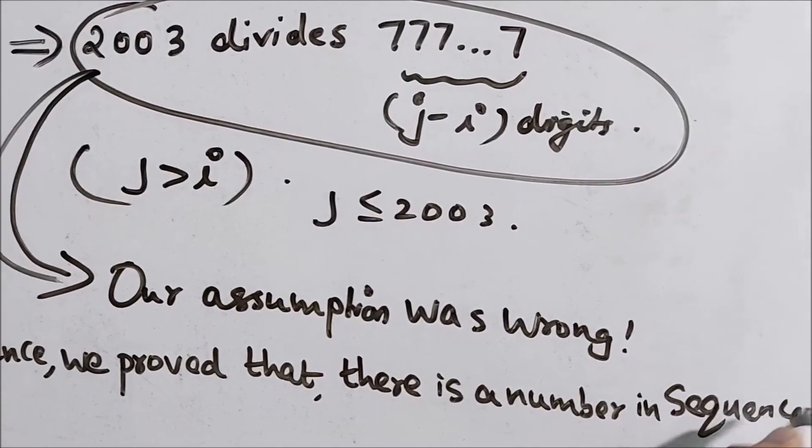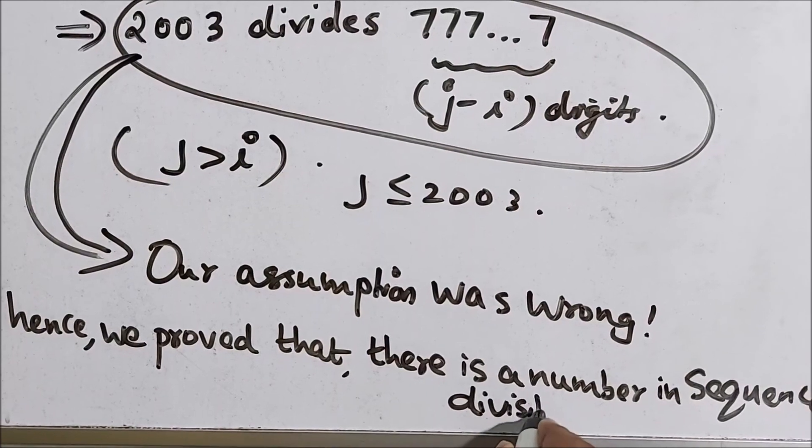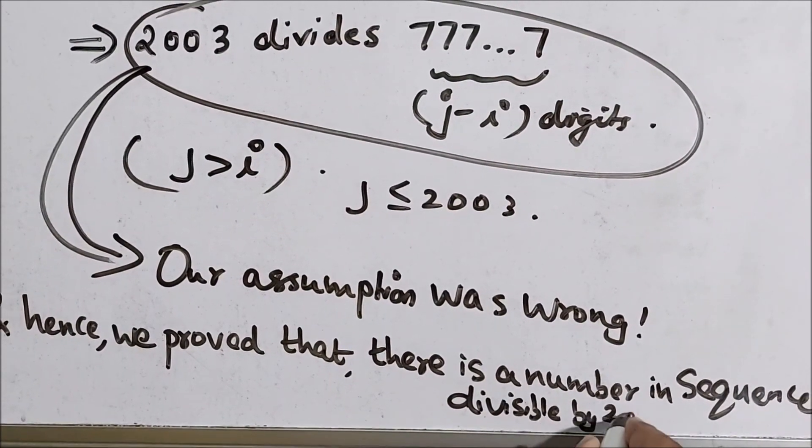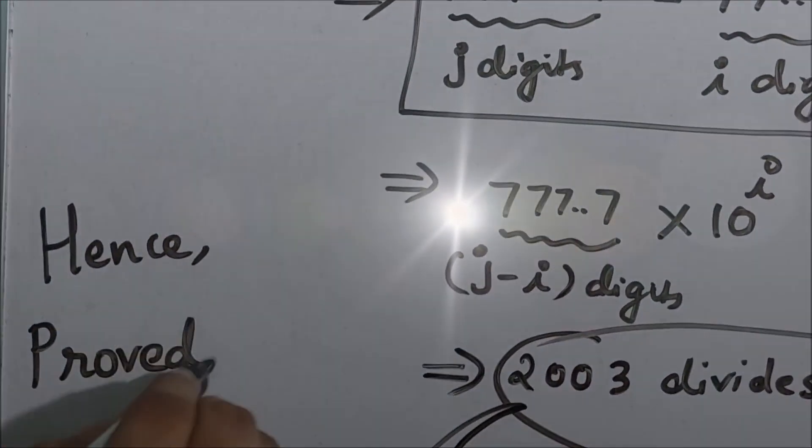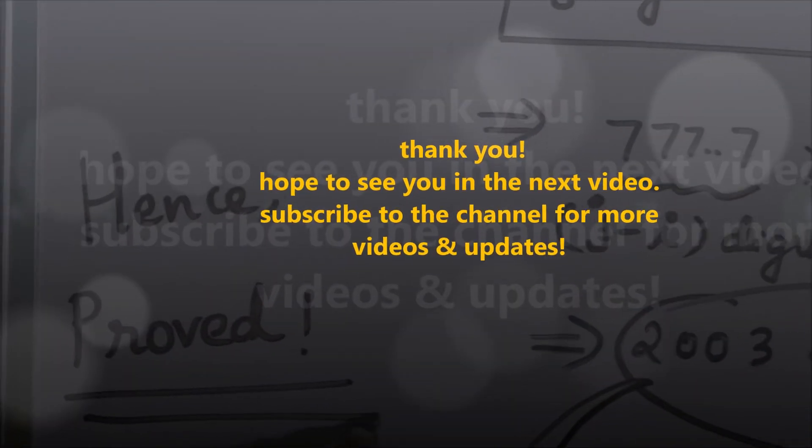And hence, hereby we proved that there is a number in the sequence such that it is divisible by 2003. Hence proved. Thank you and hope to see you in the next video.